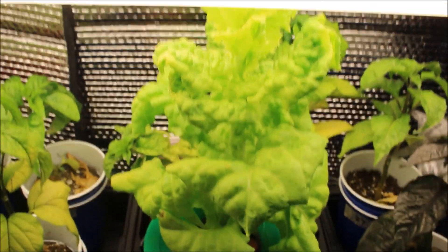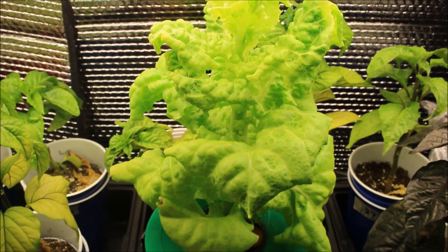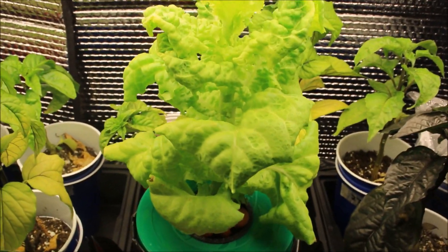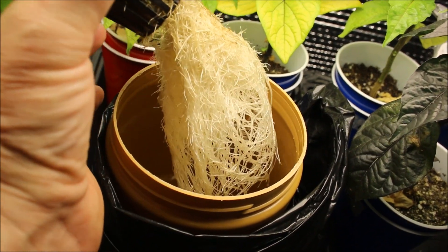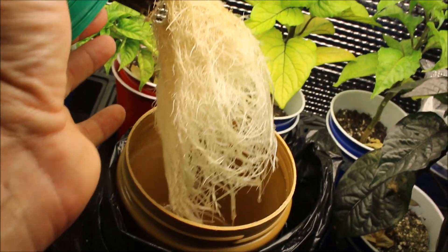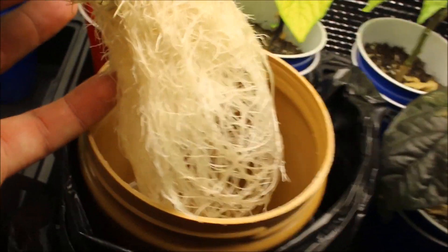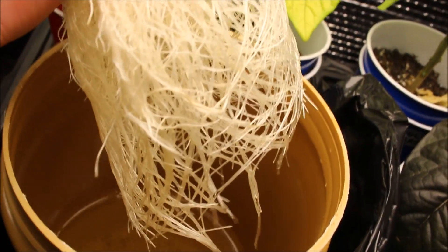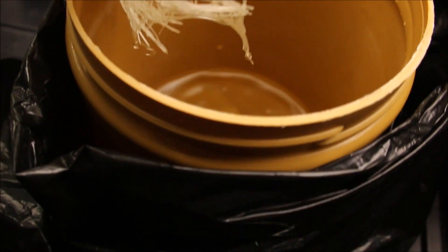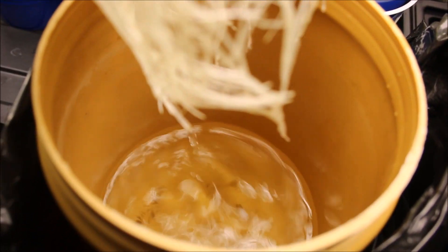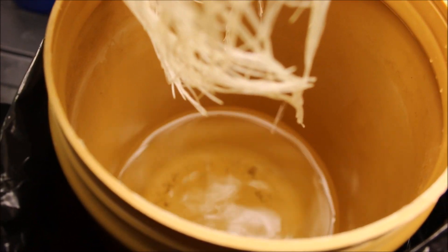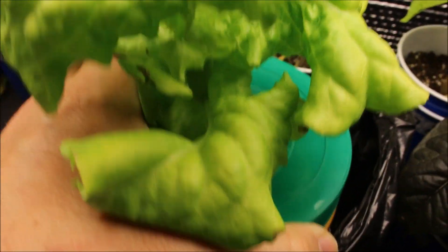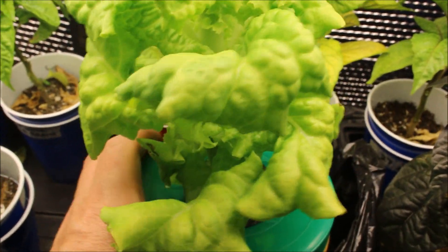So before I end this video let me just show you where we are root wise and how much this has used over this grow period to date. And you can see how nice the root structure is for doing this Kratky method. You'll see how fine these roots are, completely different from what you would see in a soil based plant. So you can see here that I'm down to about three quarters of an inch to an inch of nutrient left in the bottom of this peanut butter container. So this has lasted a whole almost a month, three and a half weeks.